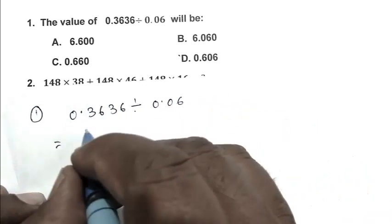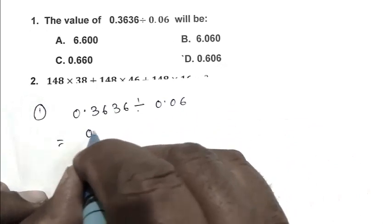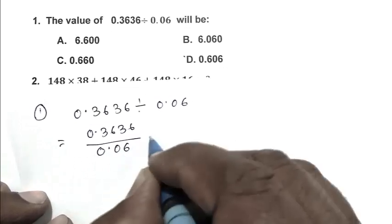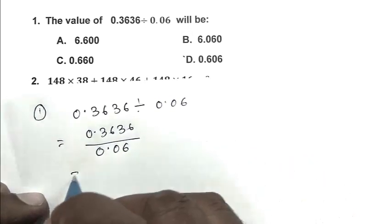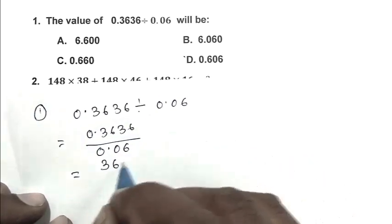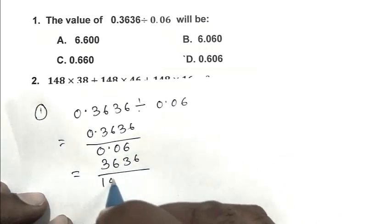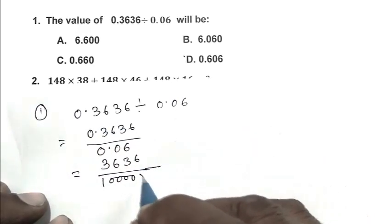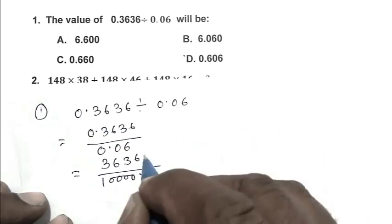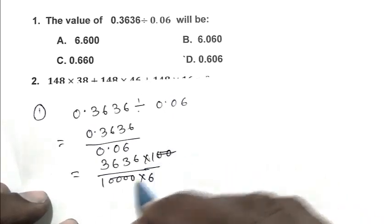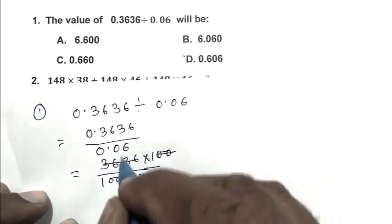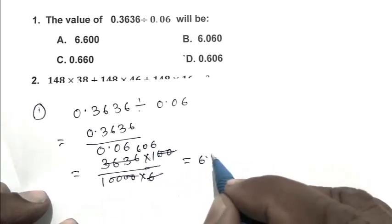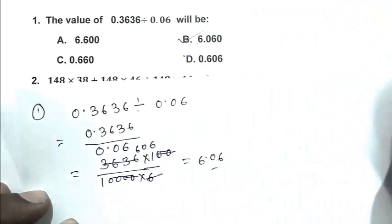We write it this way: 0.3636 divided by 0.06 or 3636 by 100 here 6 into 100, 606. So 6.06. B is the right answer.